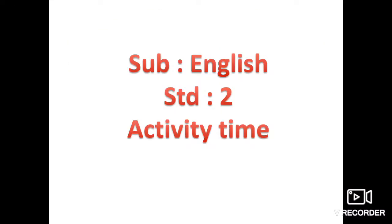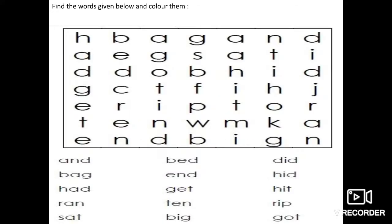Subject: English Standard. Activity time - find the words given below and color them. You see that big box over there? In that box there are many alphabets, many letters given. And below the box, there are many words given. You have to find these words in that box.